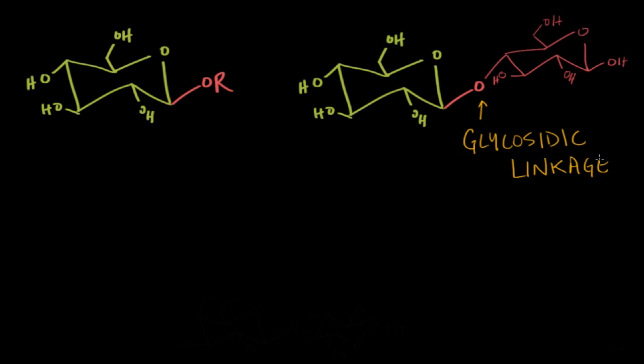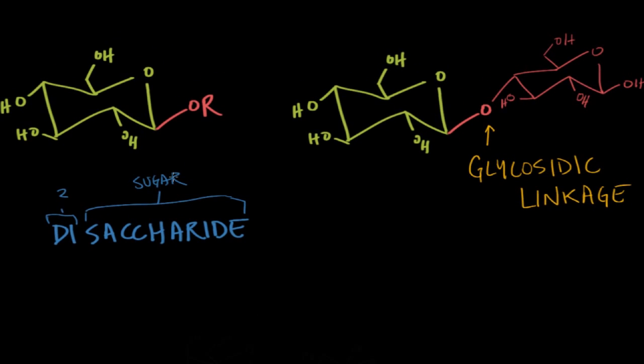When two monosaccharides are linked together in this fashion by glycosidic linkages, we call the product a disaccharide. We have di, which means two, and saccharide, which means sugar. So two monosaccharides linked together are called a disaccharide.